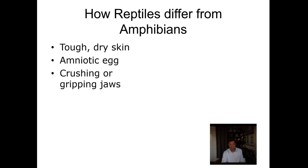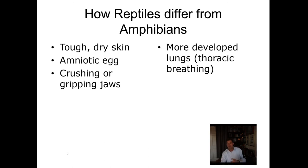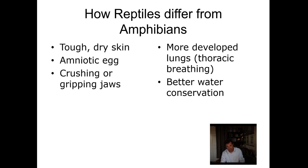Reptiles have this amniotic egg. They have crushing or gripping jaws, so the muscular system in the jaw is better developed. They have better, more developed lungs — many amphibians have very tiny lungs, and there's even a group of salamanders with no lungs whatsoever. The lungs are better, and reptiles have much better water conservation. That allows land reptiles to stay on land, and that's a big starting point.